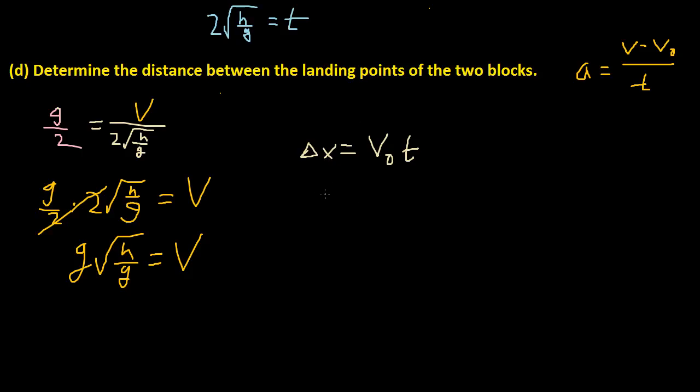So delta X equals V naught, which is g square root of h over g times T, which is 2 times square root of h over g. And this is simplifiable, because we have square root of h over g times the square root of h over g, which is just gonna be h over g. So h over g times 2, and the g's cancel out, so we're just left with 2h. So our X displacement is 2h. And that is our answer.